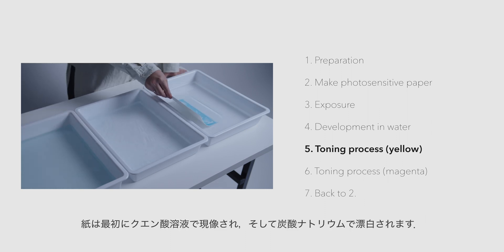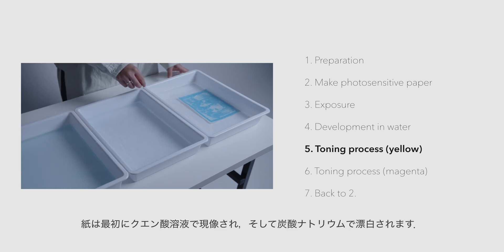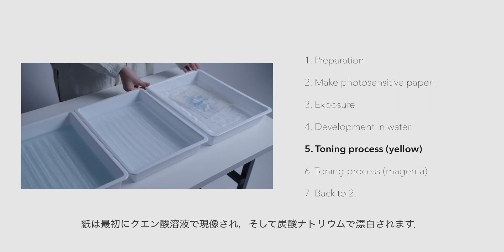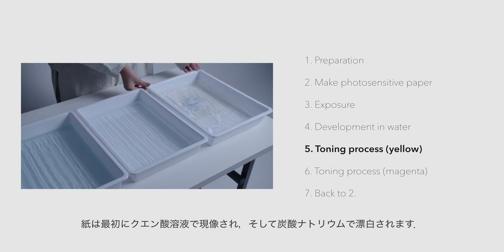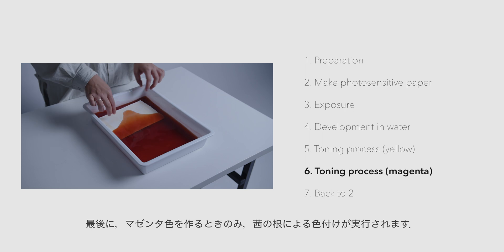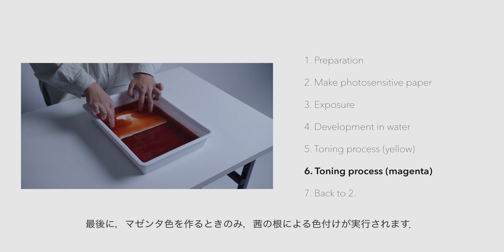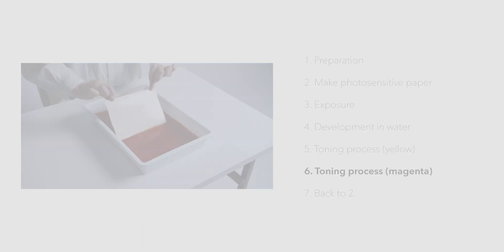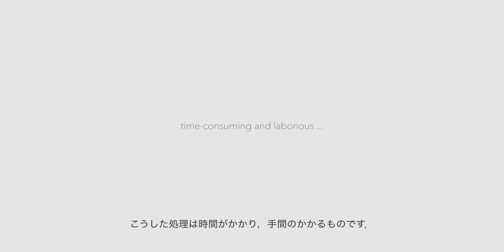After exposure, the paper is placed in water for development. Next, the toning process begins: the paper is first developed with a citric acid solution and then bleached with weak sodium carbonate. Finally, only when printing magenta, coloring with madder root is performed. These processes are very time-consuming and laborious.